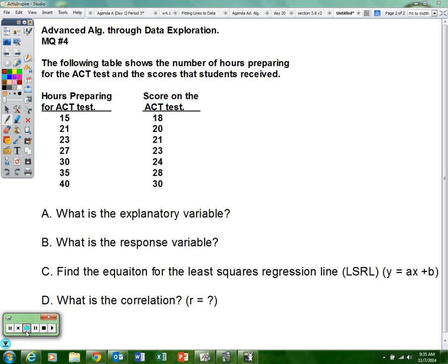So the first thing is let's answer A and B. That's pretty easy. What is the explanatory variable? Well, that would be the first column, the hours preparing for ACT test.